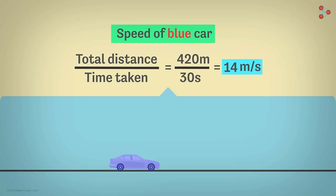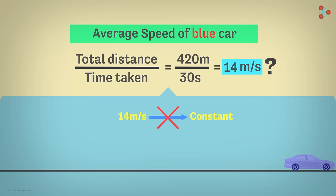Because maybe the car is moving at a really fast speed initially, and then it slows down in the middle and then stops, and then again speeds up. So this speed does not imply that the speed is constant at 14 meters per second throughout. So what is the speed then?